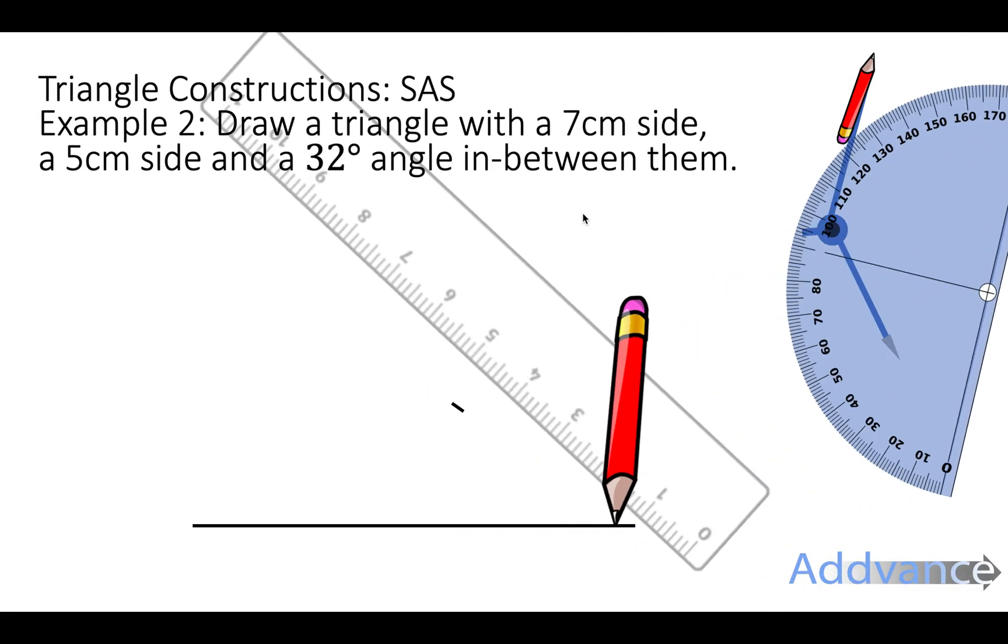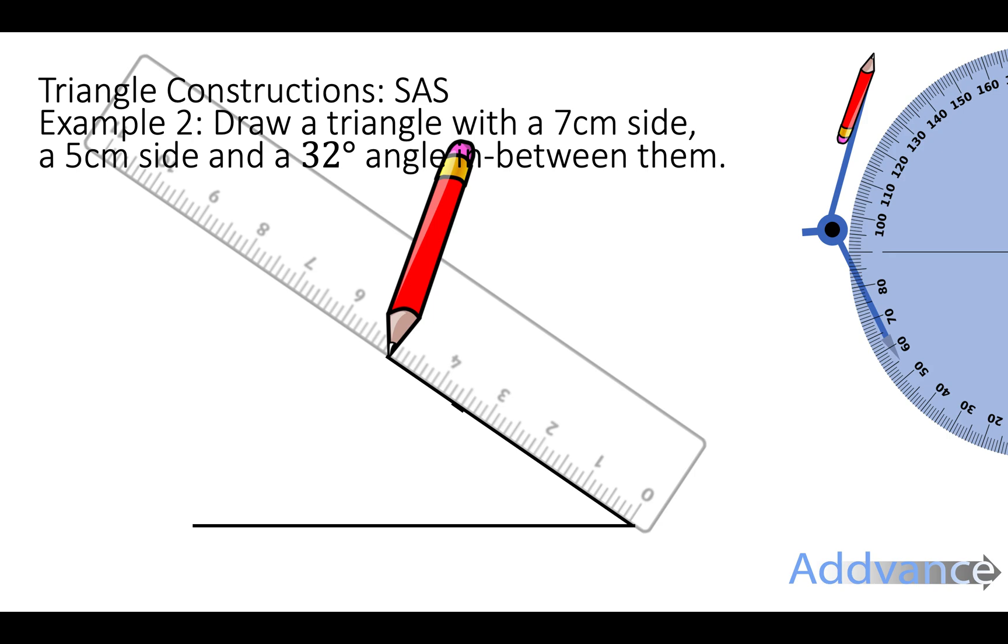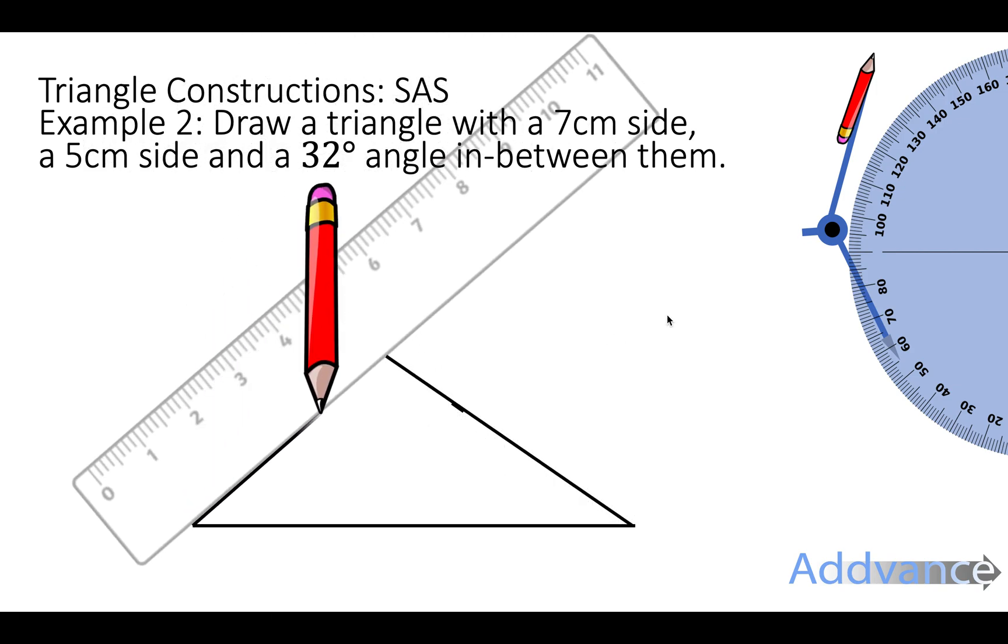Now we take our ruler and we draw a line from the tip of the first line through the dash and we make it 5cm as the other side is 5cm. So you stop at 5cm here. Now you just connect the other tip of the line with the tip of this line and you have done. And that is how you draw an SAS triangle, a side angle side triangle.